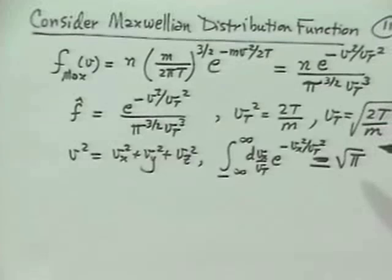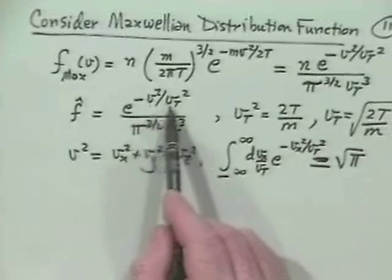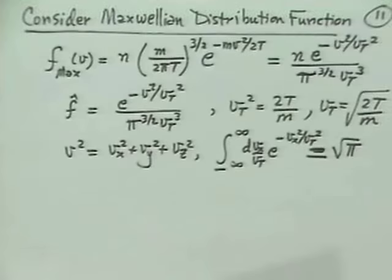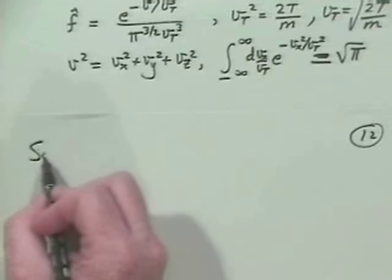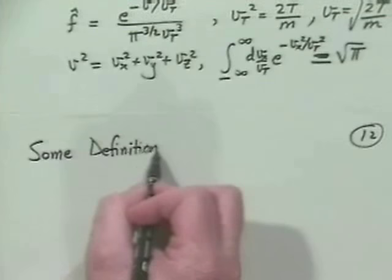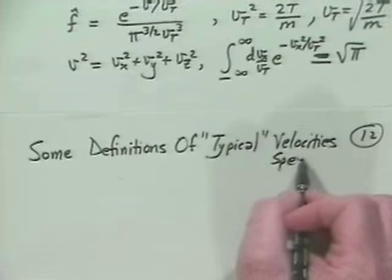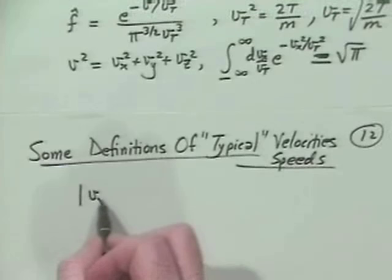Why choose v_thermal = sqrt(2T/m)? It's mathematically convenient — it makes the exponent simply −v²/v_thermal² with no extra factors. However, there are many definitions of typical thermal velocities, so let's write down a few of those.